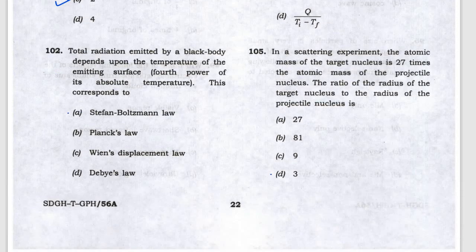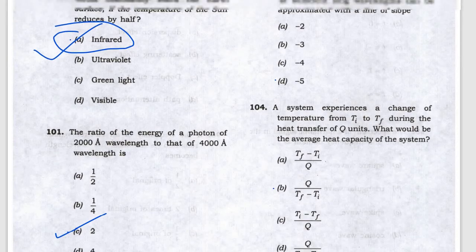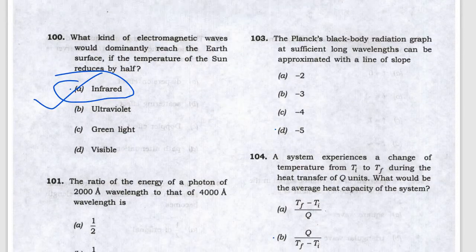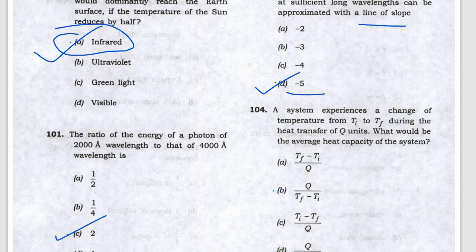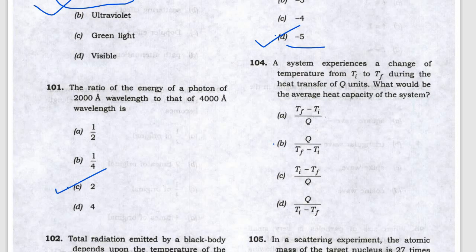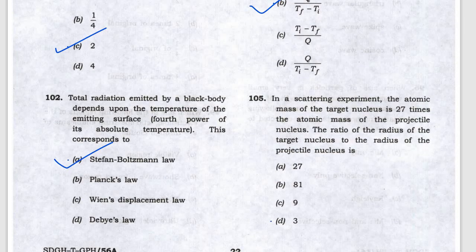This is the Stefan-Boltzmann law. For Planck blackbody radiation, the line slope at long wavelength is minus 5. The heat capacity problem is Q over T. For atomic nucleus, R equals R_0 A to the power 1/3, so for 27 times mass, radius is 3 times.